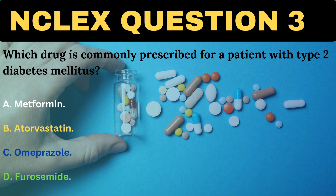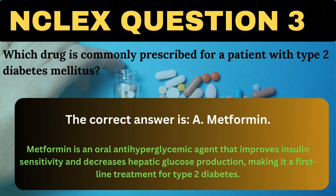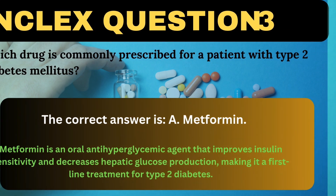Which drug is commonly prescribed for a patient with type 2 diabetes mellitus? A. Metformin. B. Atorvastatin. C. Omeprazole. D. Furosemide. The correct answer is A, Metformin. Metformin is an oral anti-hyperglycemic agent that improves insulin sensitivity and decreases hepatic glucose production, making it a first-line treatment for type 2 diabetes.